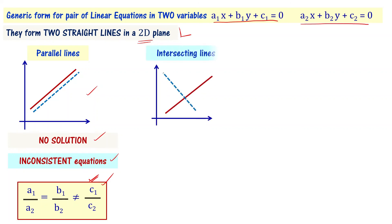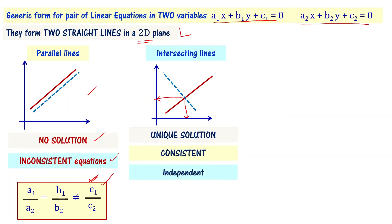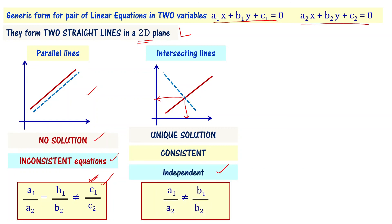The next possibility is intersecting lines. When lines intersect, there is a unique solution for the pair of linear equations. The equations are a consistent and independent set of linear equations. In this case, a1/a2 is not equal to b1/b2. Please note this — it is important.